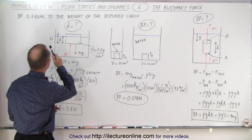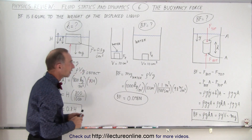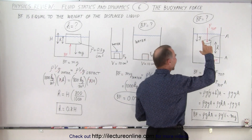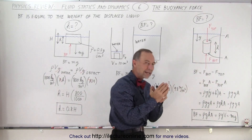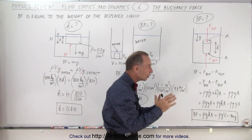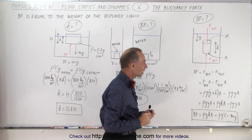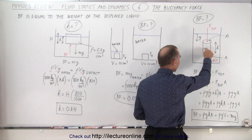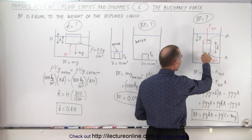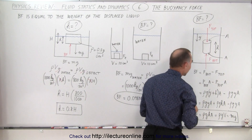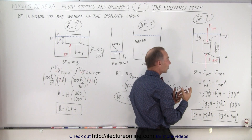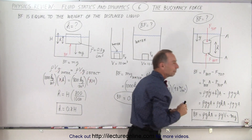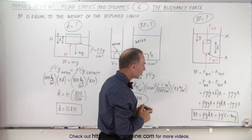Essentially, the buoyancy force is equal to the weight of the displaced liquid. So when we take an object and put it inside the liquid, we push away an amount of liquid in volume equal to the volume of the object. What we need to do is take the volume of the object, which is essentially the cross-sectional area times the height, and multiply that times the weight of that equal volume of water that's being displaced.